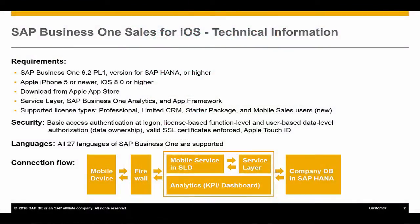For a brief overview of technical information and requirements: to use the SAP Business One Sales for iOS app, you need to run SAP Business One 9.2 Patch Level 1 version for SAP HANA or higher. You also need an Apple iPhone 5 or newer, and iOS 8.0 or higher. You can simply download the app, which is available from the Apple App Store. It utilises the service layer, SAP Business One Analytics, and the App Framework.